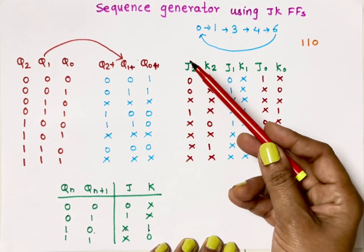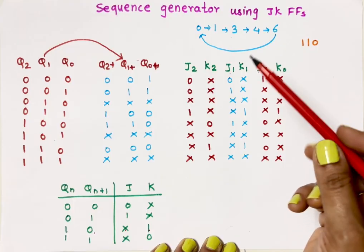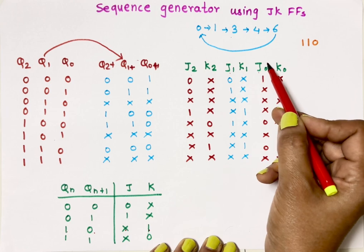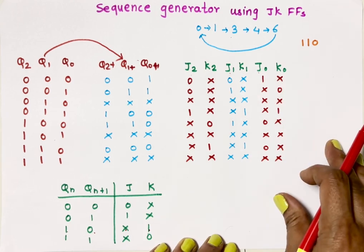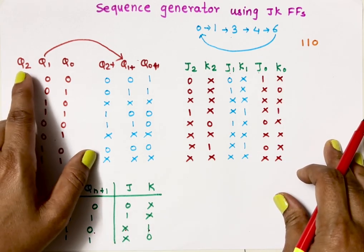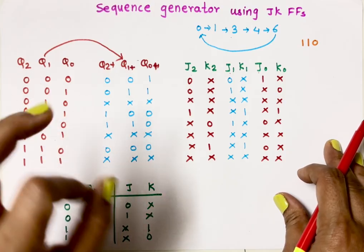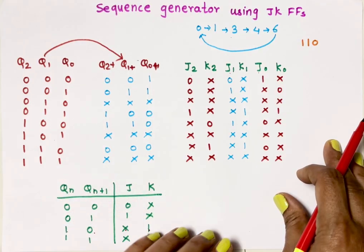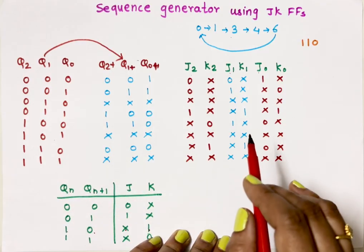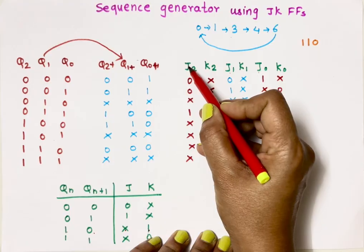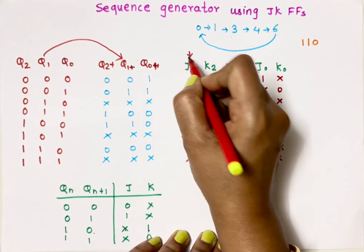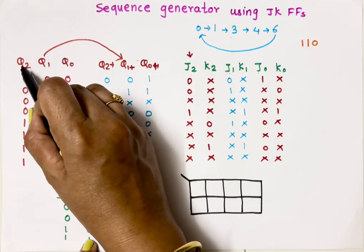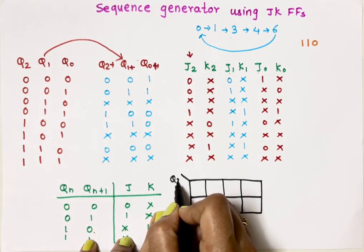Now let's find the equations for these inputs using K-maps. We have 3 inputs — Q0, Q1, and Q2 — so for 3 inputs we need a K-map with 8 cells. The K-map variables are Q2, Q1, and Q0. In K-maps we use Grey code ordering: 00, 01, 11, 10 — not binary code. Let's start with J2.